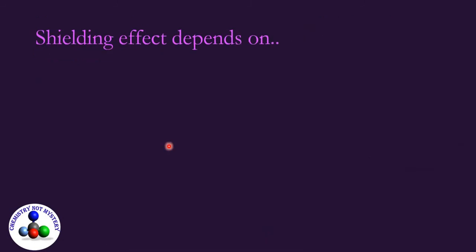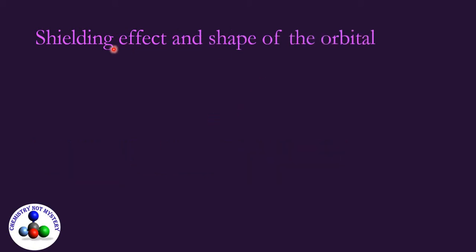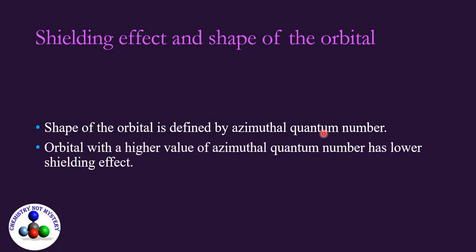Shielding effect depends on the number of orbits to which inner electrons belong and the shape of orbital in which inner electrons are present. Let's see what is the relation between the shape of the orbital and the shielding effect. Shape of the orbital is defined by azimuthal quantum number. Orbital with a greater value of azimuthal quantum number has lower shielding effect. That means there is a direct connection between the azimuthal quantum number and the shielding effect.